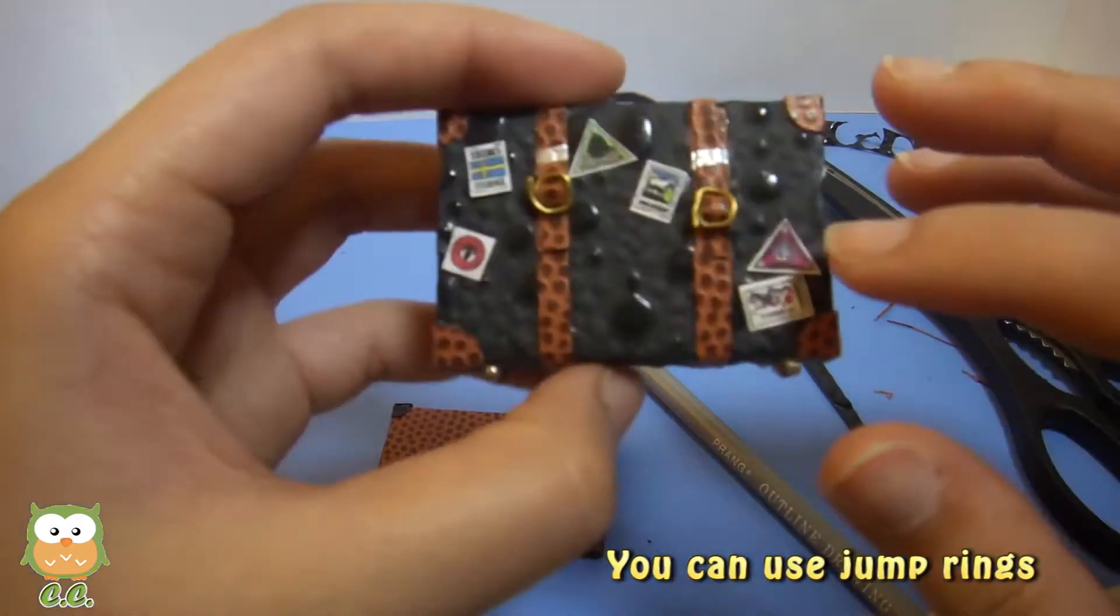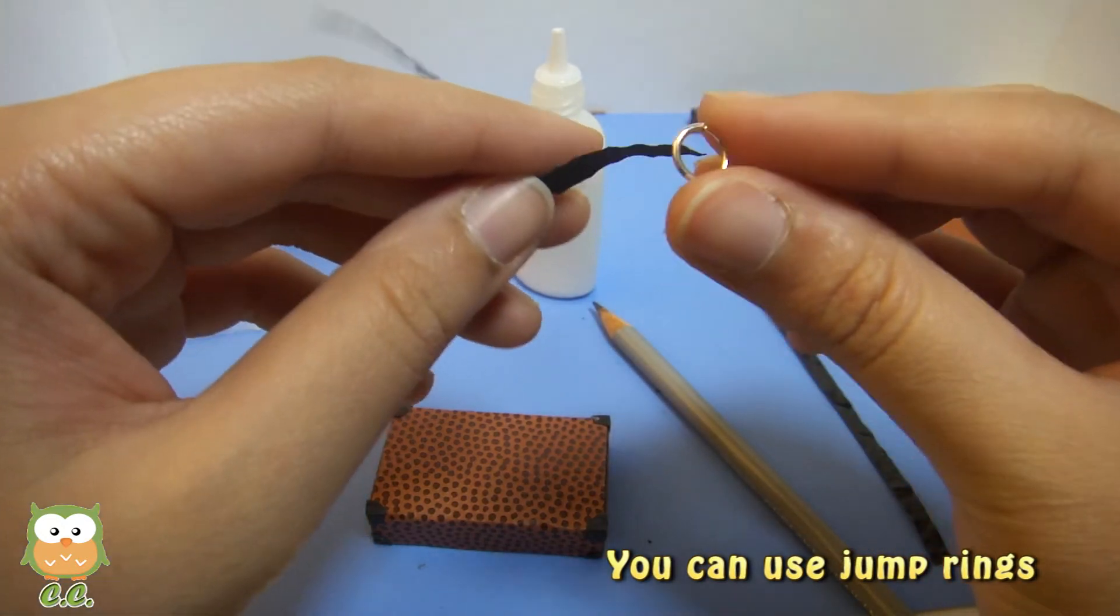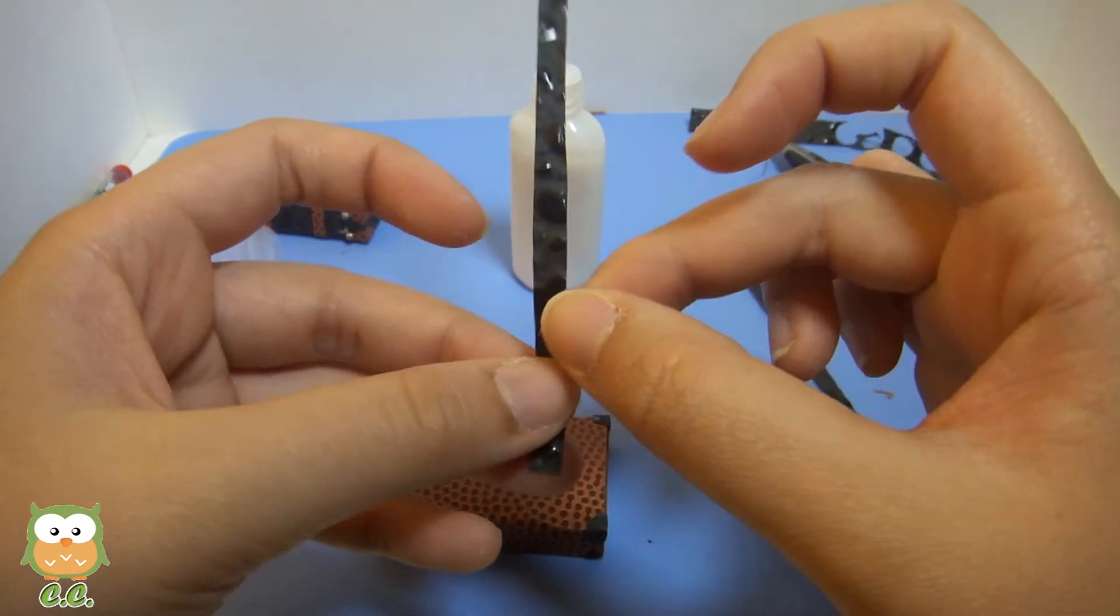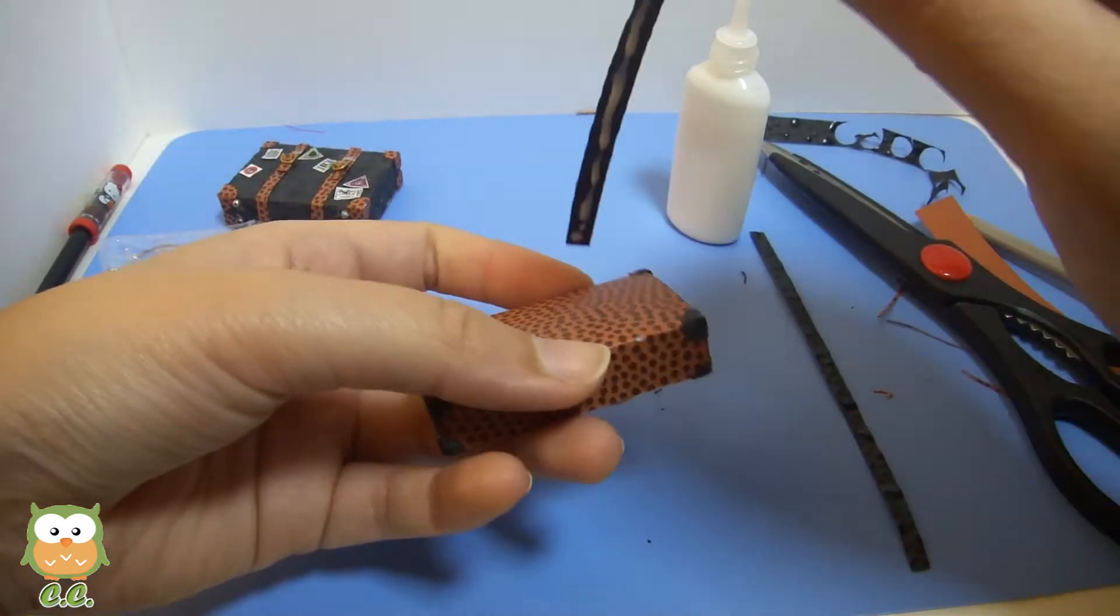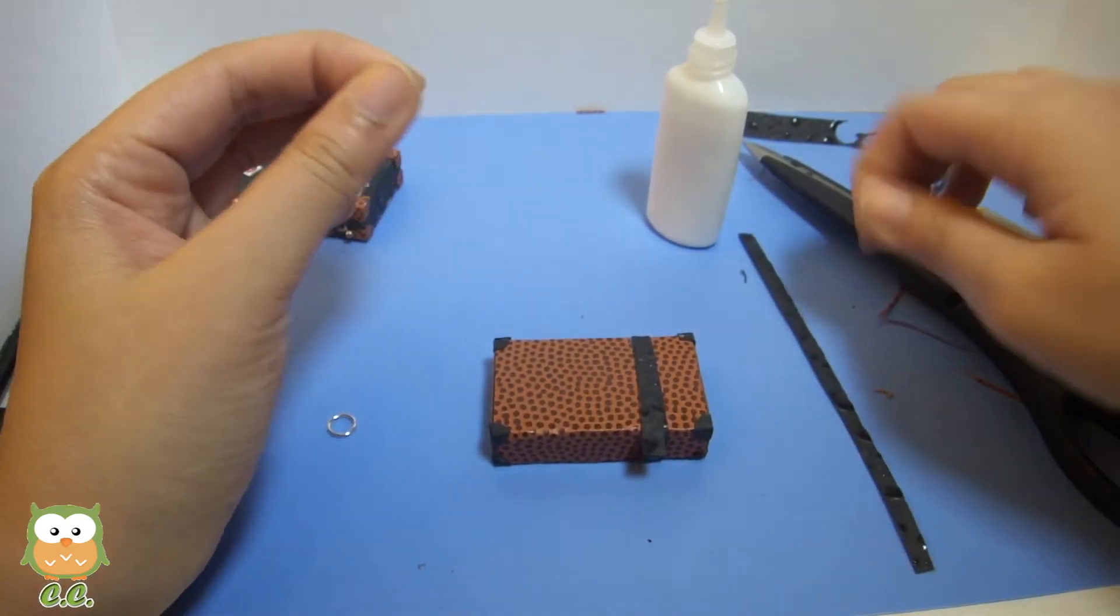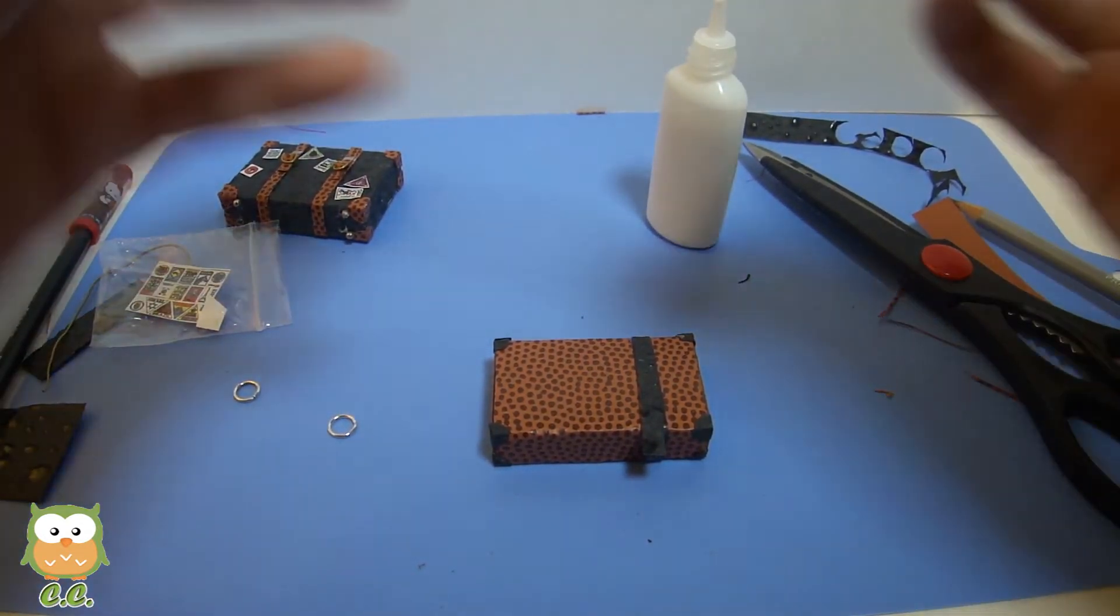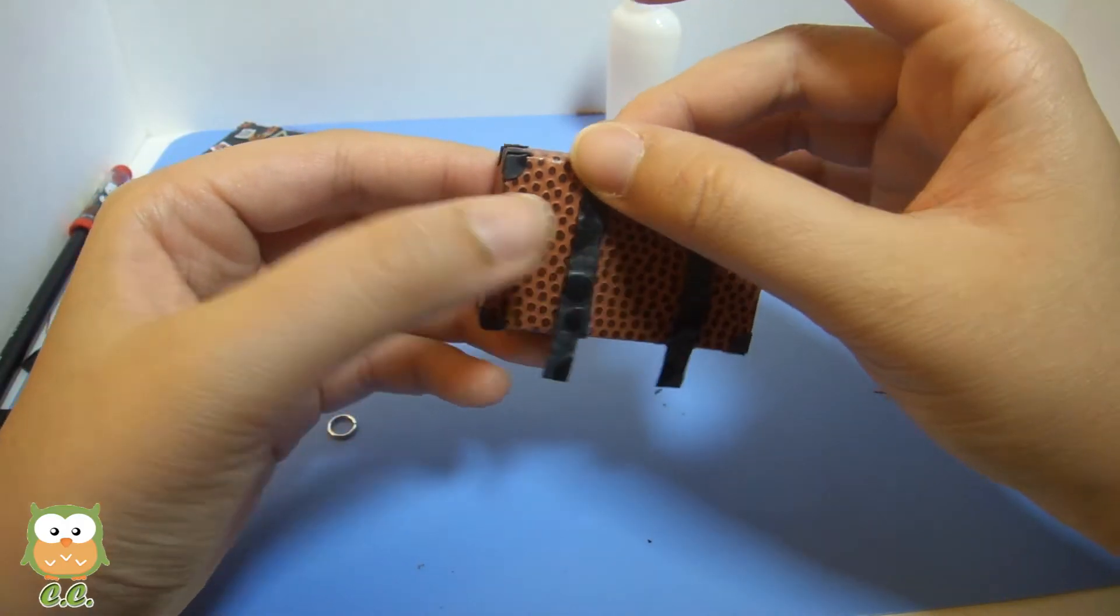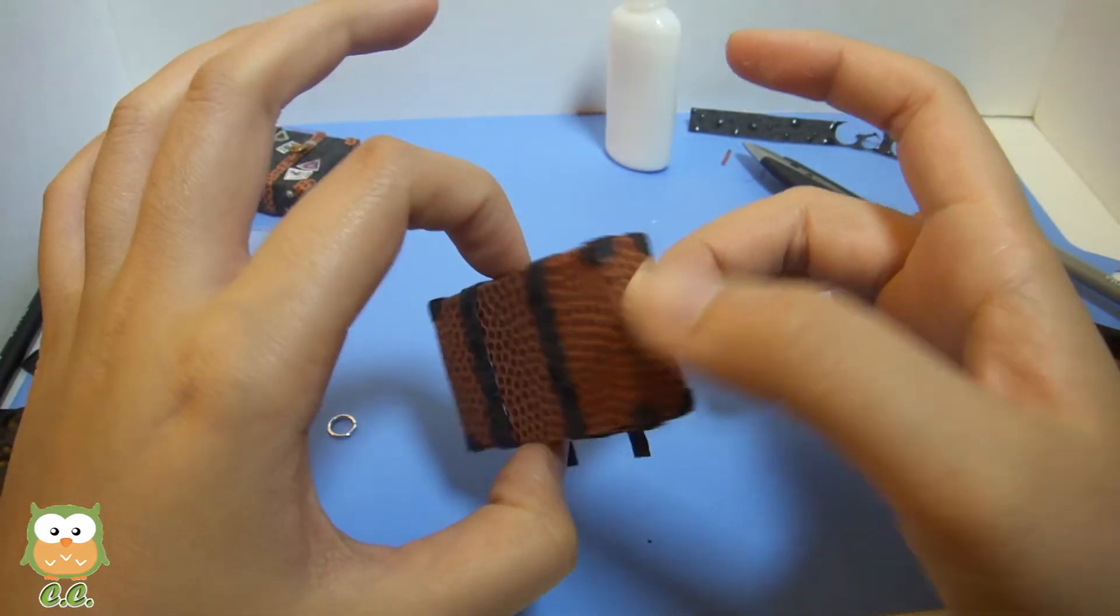We also need the buckles. What I'm gonna do is just go over it and then have it stick on like this. Stick it first and let that dry into the other piece.